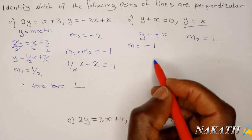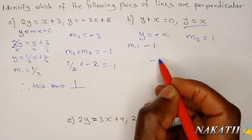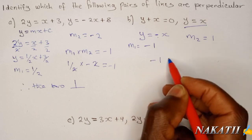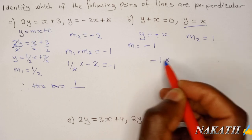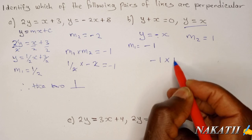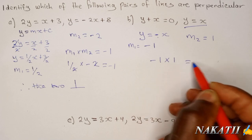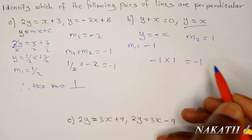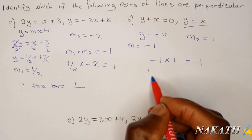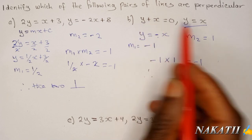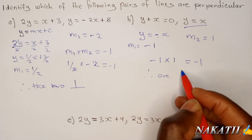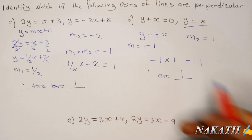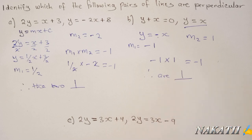So if you take negative 1 times 1, you get negative 1. Therefore, these two lines are also perpendicular.